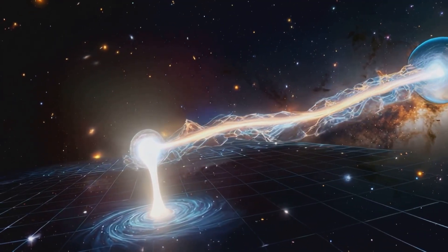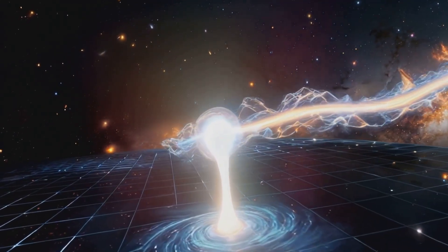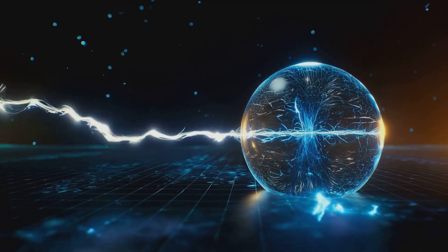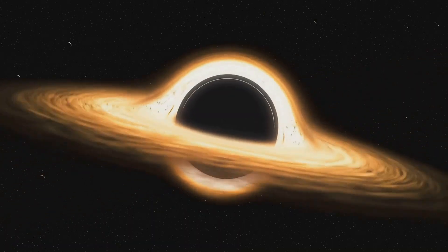The event horizon acts as a filter, a gatekeeper of information. It ensures that the amount of information within a given region of space never exceeds the information encoded on its boundary.